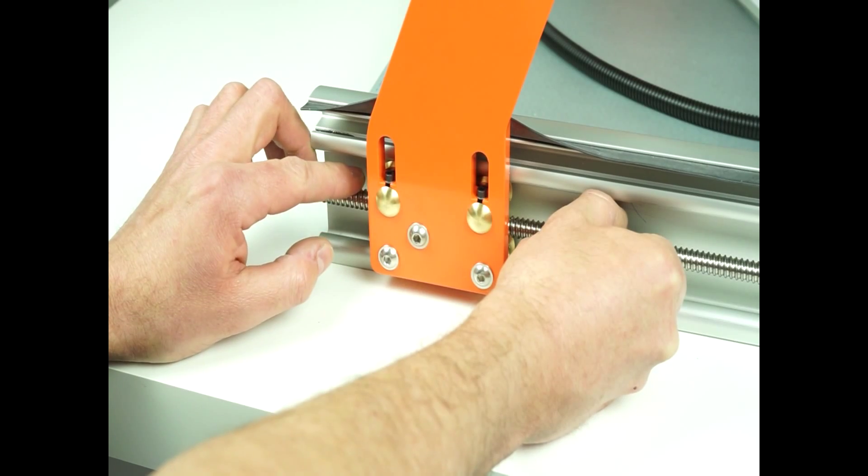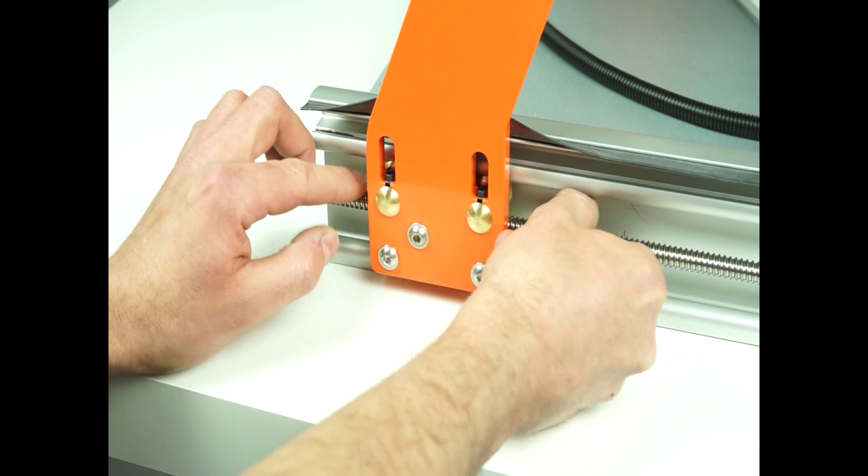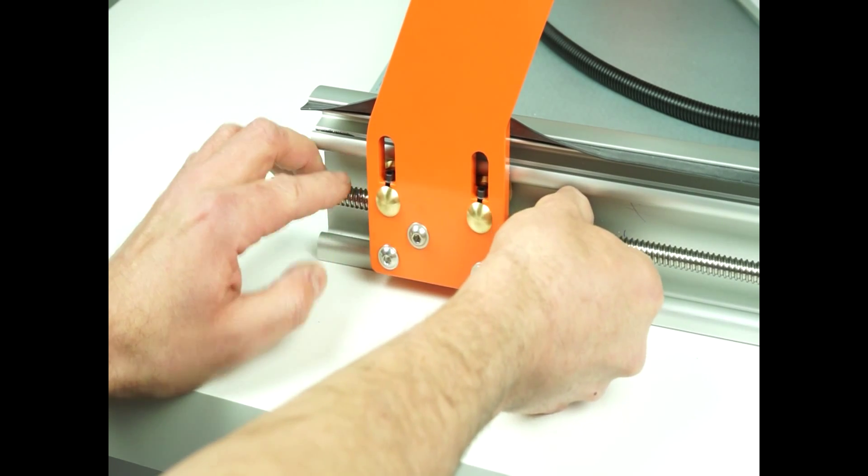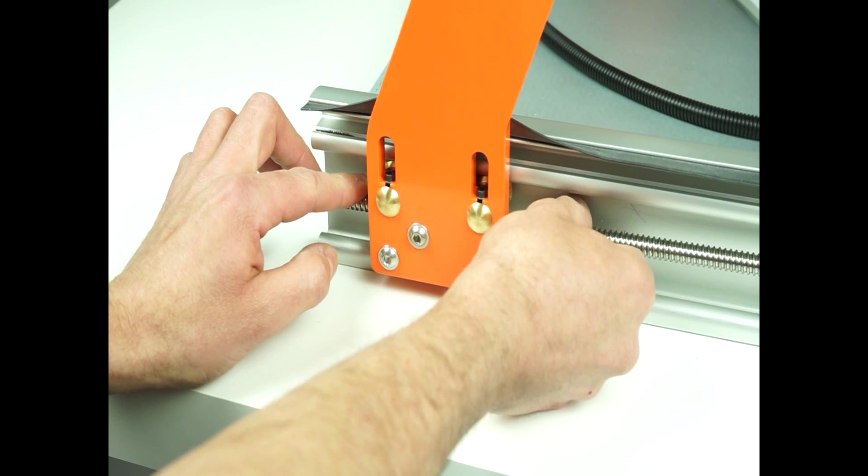To adjust the center point, grab the lead screw close to the lead screw nut and move it carefully towards the center of the bearing. In some cases you might need to move it up, while other times you might have to move it down.